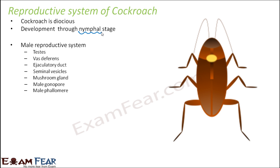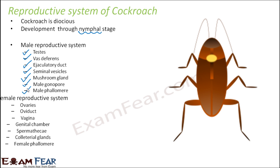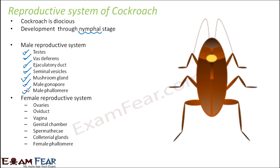The organs forming the male reproductive system are: testis, vas deferens, ejaculatory duct, seminal vesicles, mushroom gland, male gonopore, and male phallomere. Similarly, the female reproductive system consists of organs like ovaries, oviduct, vagina, genital chamber, spermathecae, colateral glands, and female phallomere.